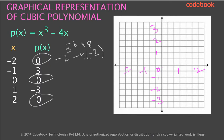Now let's try to plot this on a graph. We have a labeled graph, so let's plot these points. When x is minus 2, the value is 0, so let's put a point here. When x is minus 1, the value is 3, so let's put a point here. When x is 0, the value is 0. When x is 1, the value is minus 3. And when x is 2, the value is 0.